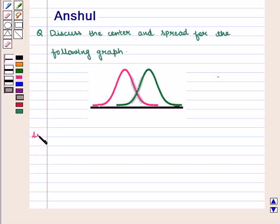Now let us start with the solution of this question. Here we are given a graph showing curves for two different data sets. The pink curve shows one data set and the green curve shows another data set.